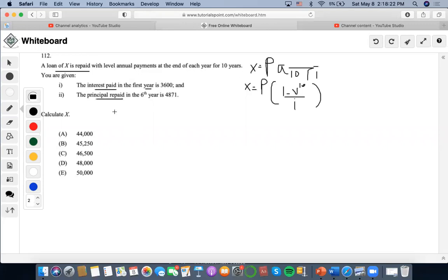So what is the principal paid formula? That's 1 minus v to the n minus t plus 1. And principal repaid is just v to the n minus t plus 1.